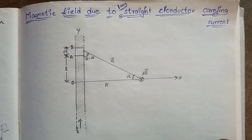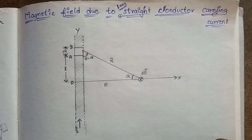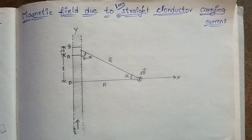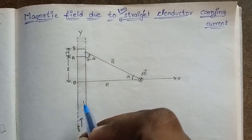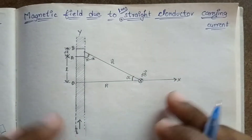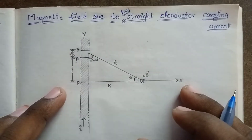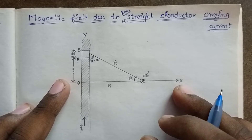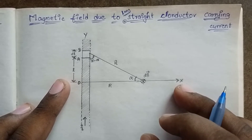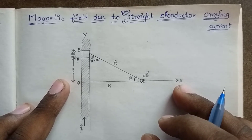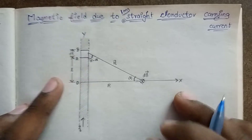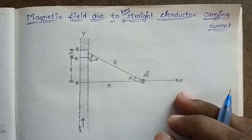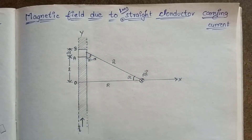Today we have magnetic field due to long straight conductor carrying current. We are going to take a look at it. First, what is the question? This diagram is the question. We have to explain the details. Here we are going to take a look at the diagram and talk about it.